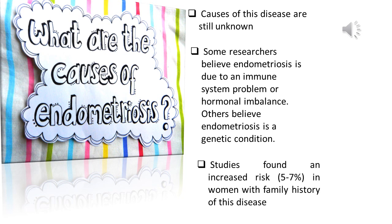The causes of endometriosis are still unknown. Some researchers believe endometriosis is due to an immune system problem or hormonal imbalance. Others believe endometriosis is a genetic condition. Studies found an increased risk of 5–7% in women with a family history of this disease.